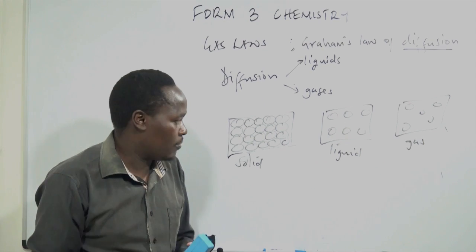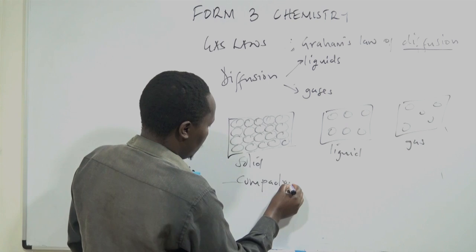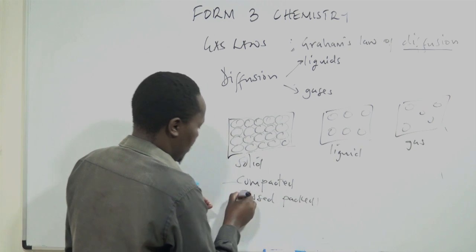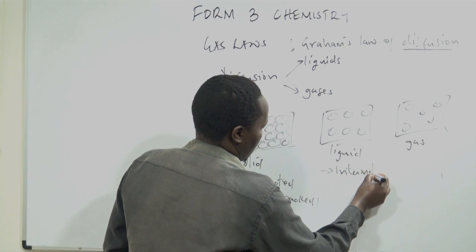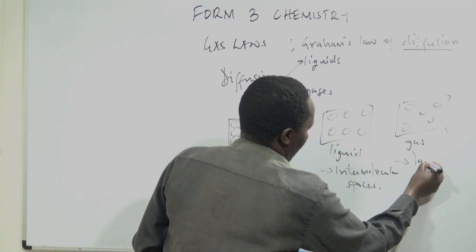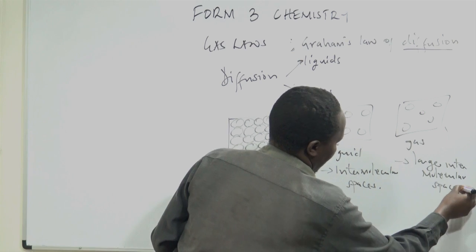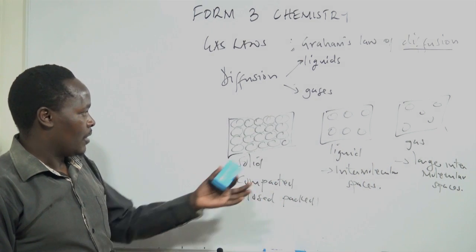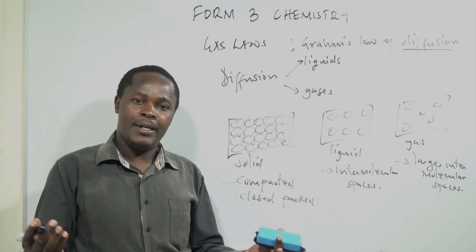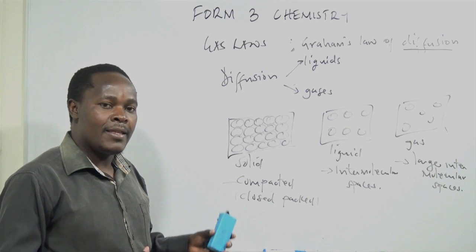Looking at the arrangement of particles in the three states of matter, in solids the particles are compacted — meaning the particles are closely packed together. In liquids, there exist intermolecular spaces. In gases, we have large intermolecular spaces. This explains why we can explain diffusion in liquids and gases but not in solids, because the particles in solids are closely packed together.